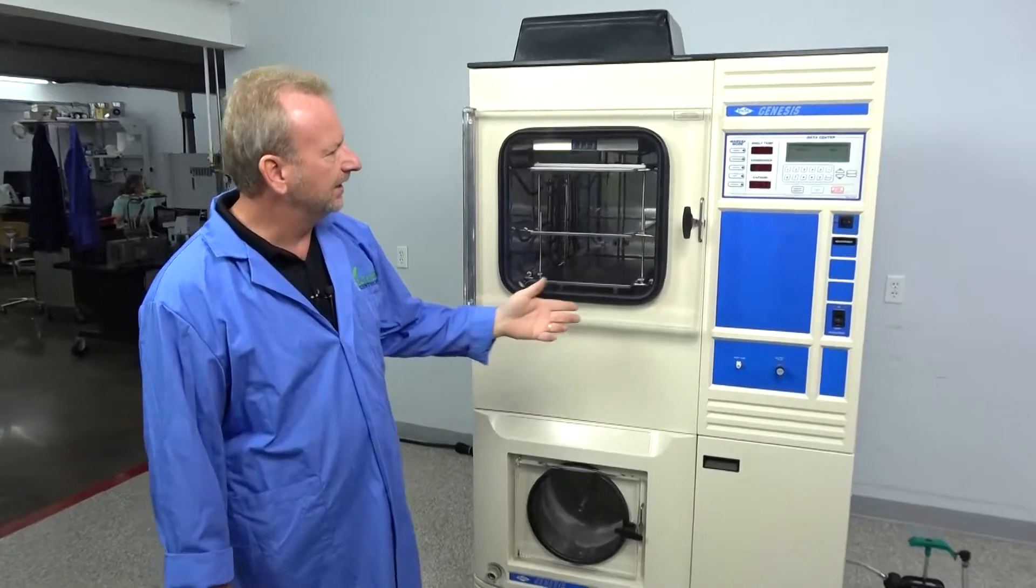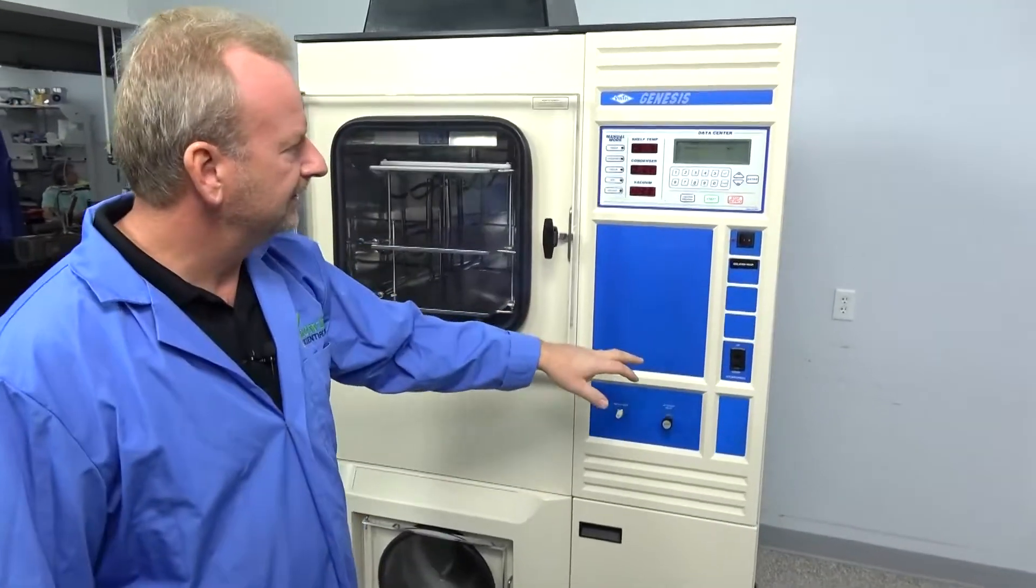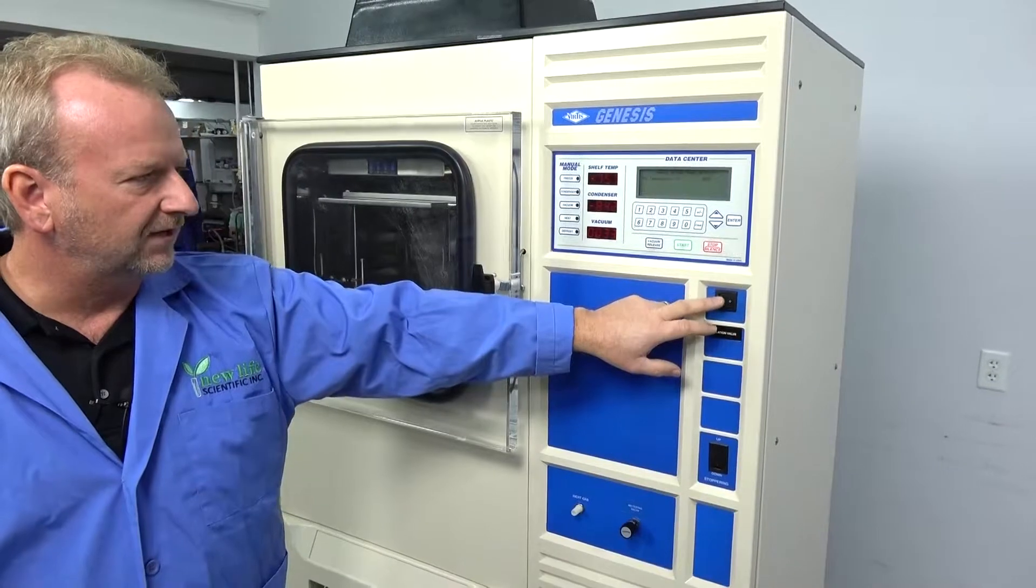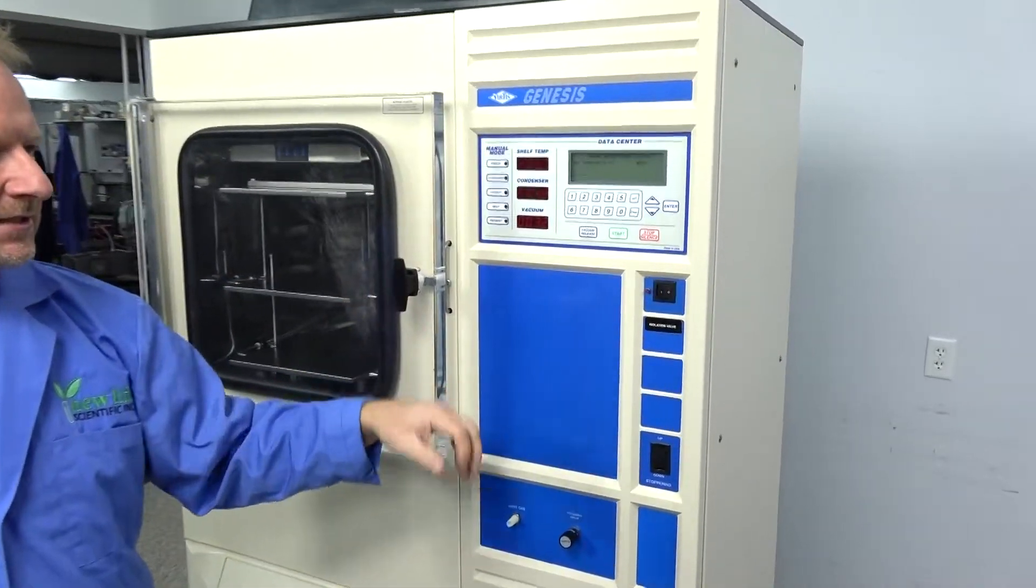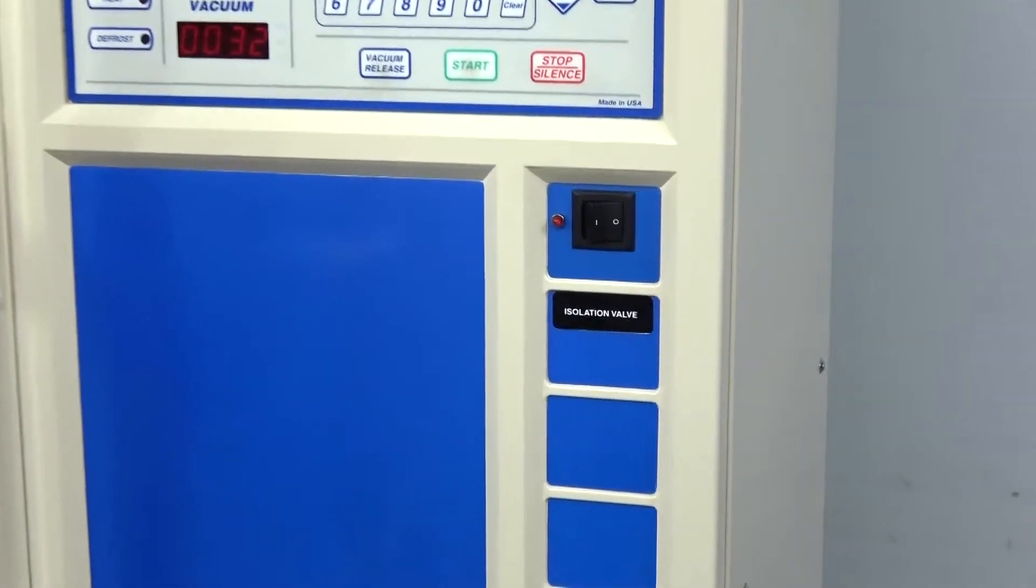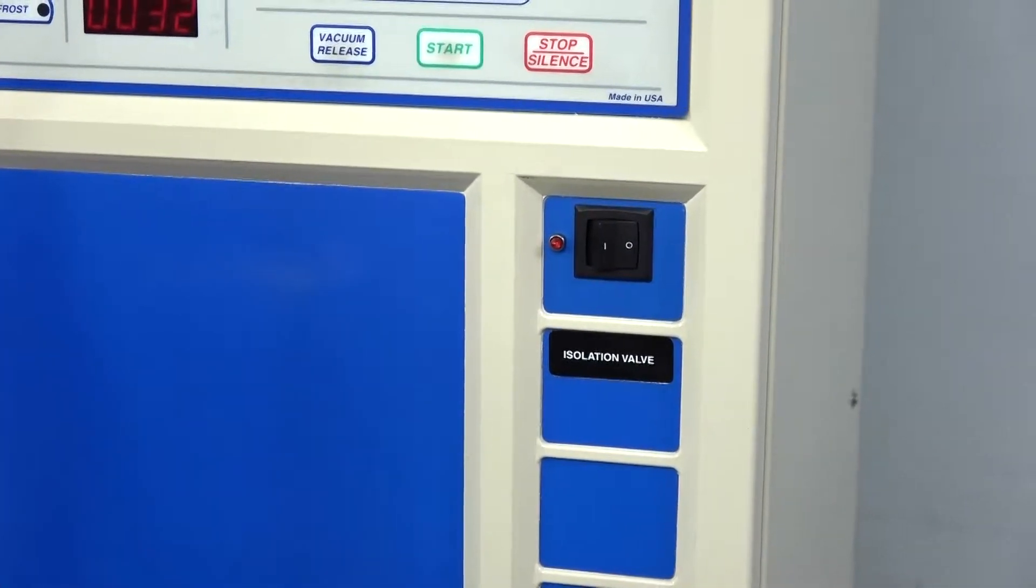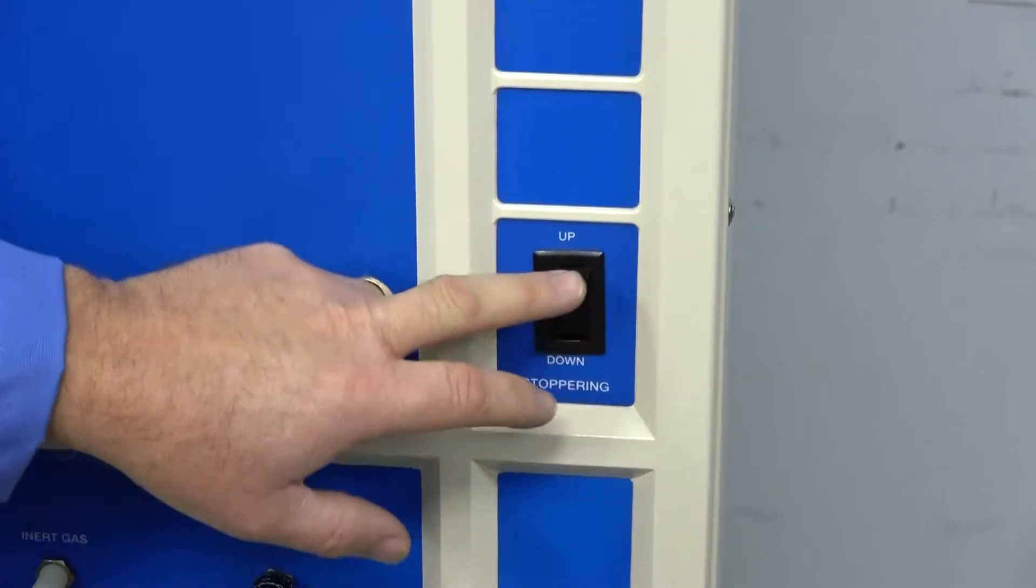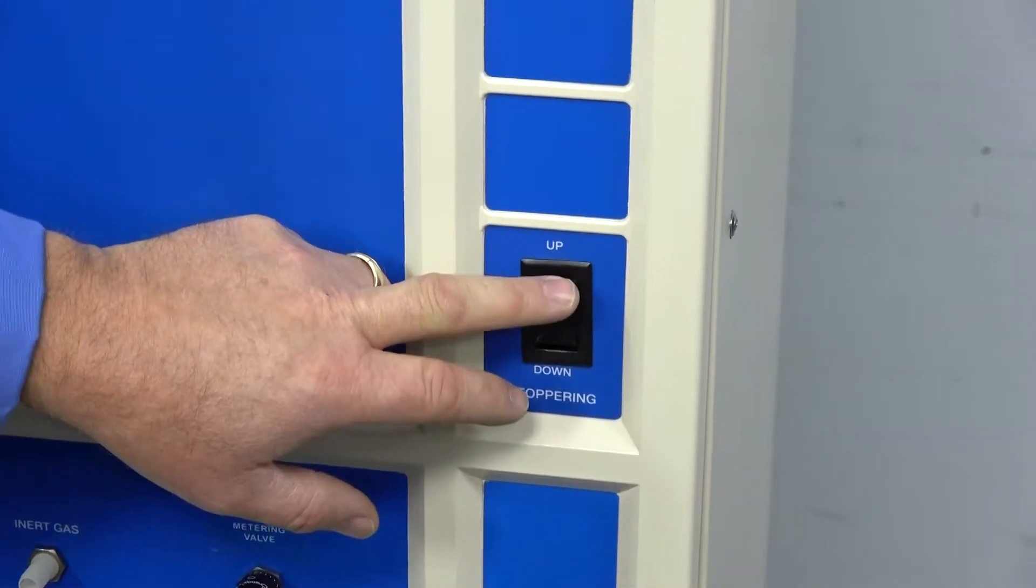But I do want to point out the options first. This does have the isolation valve, which works fine. I did replace the solenoid that drives that. It was showing a little wear, so I replaced the solenoid valve in it. It also has the stoppering in it, and this is the switch to run it up and down here.